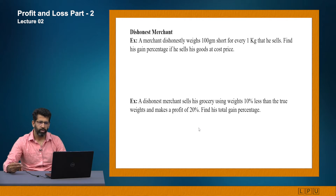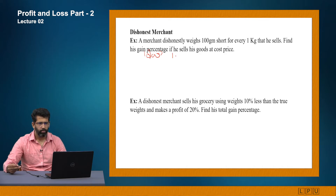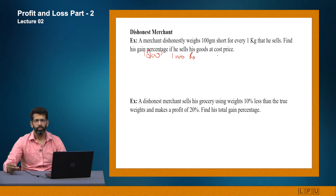Example number one: a merchant dishonestly weighs 100 grams short for every one kg that he sells. Find his gain percentage if he sells his goods at cost price. In these kinds of situations, always assume that 1000 grams, that is 1 kg, costs 1000 rupees to the merchant. So the cost price of 1000 grams is 1000 rupees, meaning the article costs 1 rupee per gram.